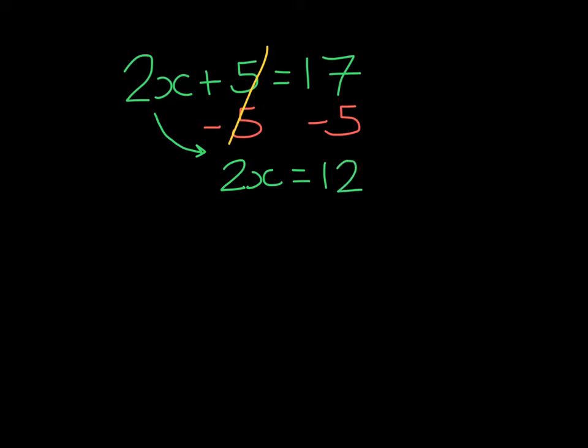If we notice, now we have a one-step equation. X is being multiplied by 2. The inverse is to divide by 2. Remember, 2 divided by 2 will give us 1. So I have 1 with x, and 12 divided by 2 is 6.